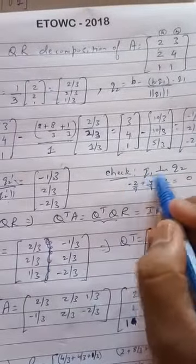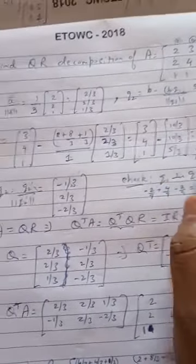Now, how can we check that our answers are right? If you want to find Q1 perpendicular to Q2, multiply the two. Once you do that, you get minus 2 by 9 plus 4 by 9 minus 2 by 9. And that answer is 0. Therefore, our orthonormal vectors are correct.